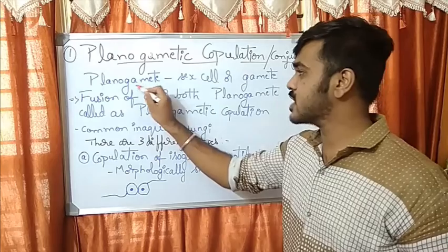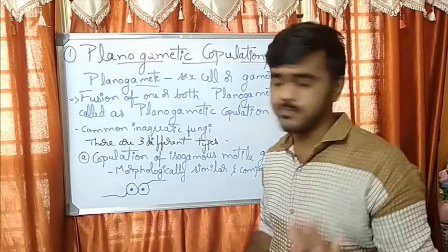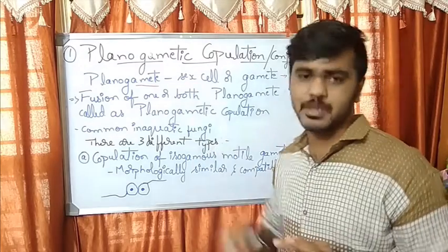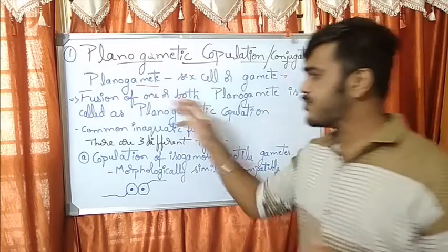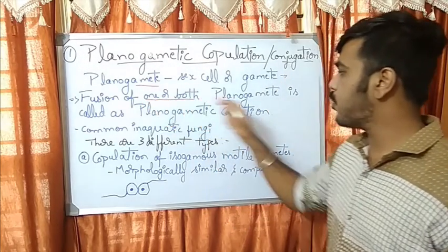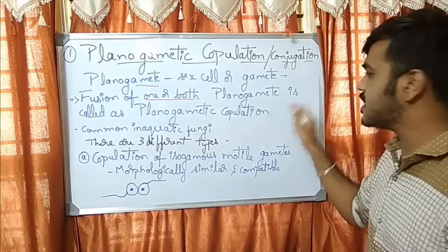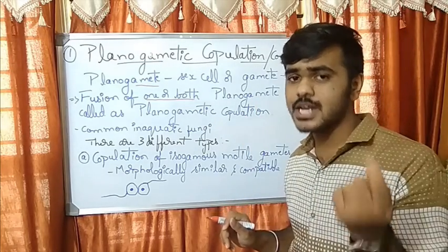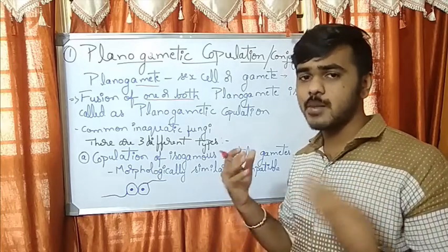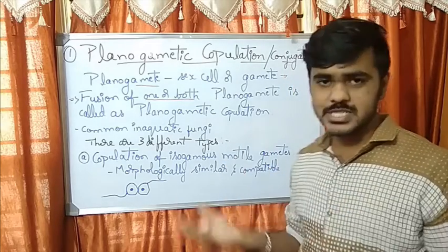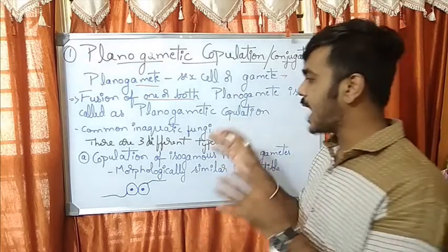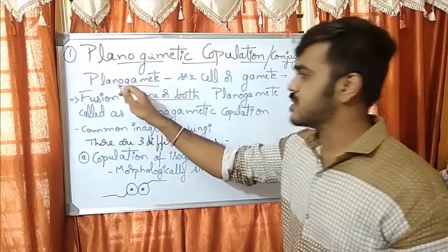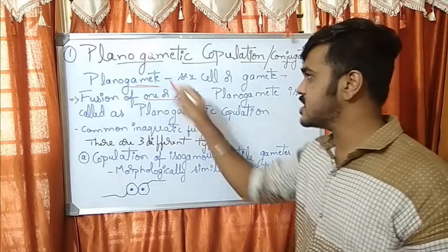The fusion of one or both planogametes is called planogametic copulation. This means at least one motile, or both motile gametes, are fused to form a zygote — then we call it planogametic copulation. Remember the meaning, then understand the definition.